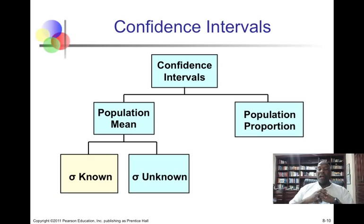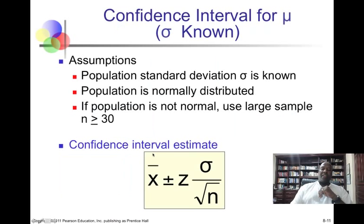We have a second case where sigma is unknown, and so that is the case that would be more likely to occur in real life. And we deal with population proportions.